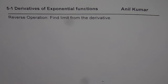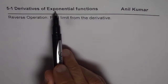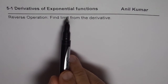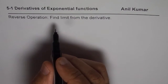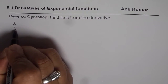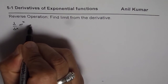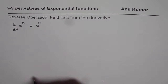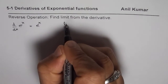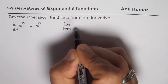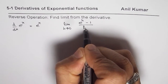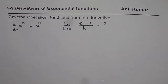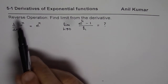I am Anil Kumar and in this particular video we will do a reverse operation. We know that the derivative of the exponential function e to the power of x is e to the power of x, and we will find limits from that derivative. Specifically, we will try to find the limit as h approaches 0 of e to the power of h minus 1 over h, from the very basic definition of derivatives.